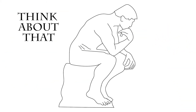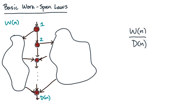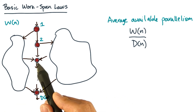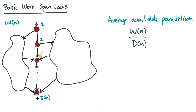Think about that for a second. At every critical path vertex, there's an average amount of work. So this ratio basically tells you the average available parallelism in the DAG. So imagine you're a critical path vertex — say this one. When that critical path vertex executes, there's going to be a bunch of work sitting around. And on average, the amount of such work is w divided by d.